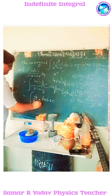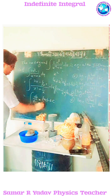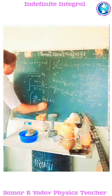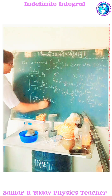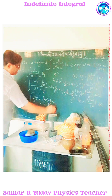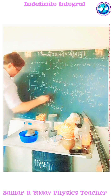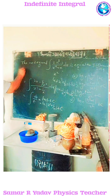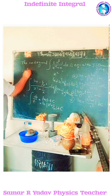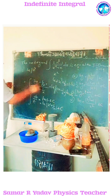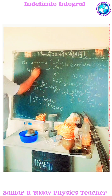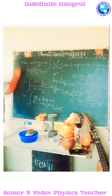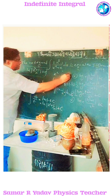Integrating dt/t gives ln(t) + C. Now substituting back the value of t, we get ln|x² + 1/x| + C. Simplifying by taking LCM, this becomes ln|(x³ + 1) / x| + C.